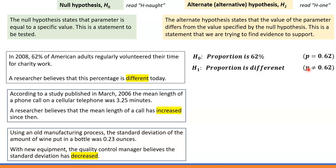We use a not-equal-to sign. H1: p ≠ 0.62. That's how we describe the alternative hypothesis in this case.